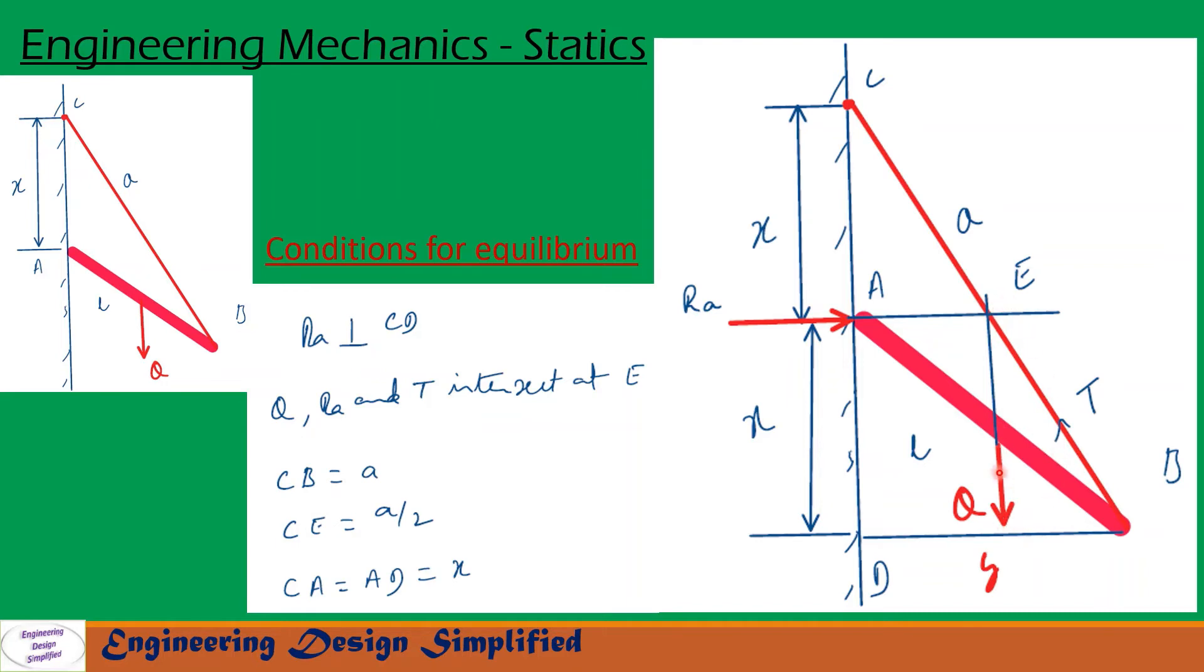Now let us draw a line from Q vertically. From the center of this prismatic bar, if a line is drawn vertically parallel to this side, that will bisect this string CB into two equal sections. So from C to E is A by 2 and E to B is A by 2 since the total length is A. Similarly, when we draw a line from RA, that also must join at this point for the system to be in equilibrium. If this side is X and from here to here is A by 2, if you draw a line from this end of the string onto this wall, this distance will also be X. So here we have X and X.